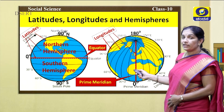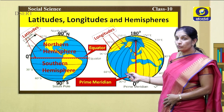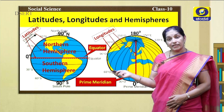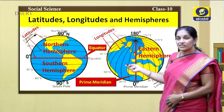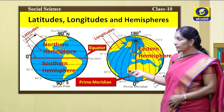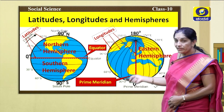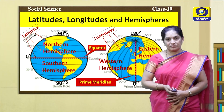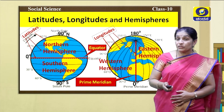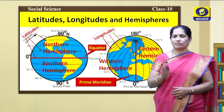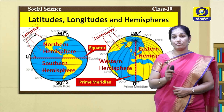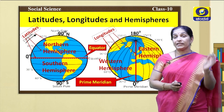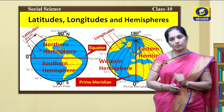From 0 degree longitude to 180 degree longitude in the east is called the eastern hemisphere, and from 0 degree to 180 degree west is called the western hemisphere. The latitudes and longitudes are very important to locate any place on the earth.